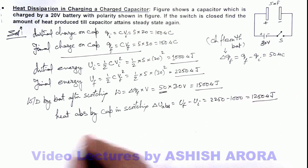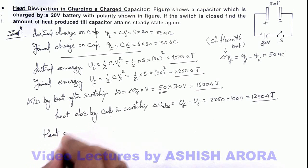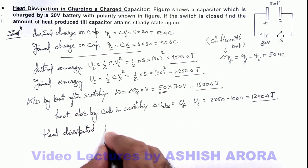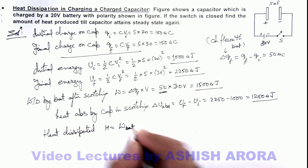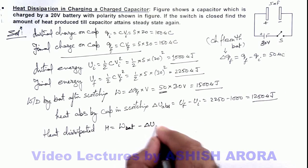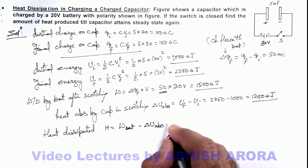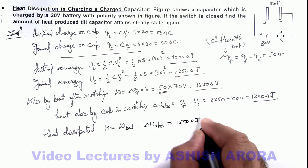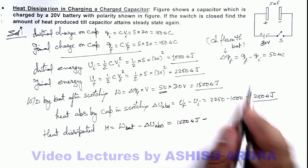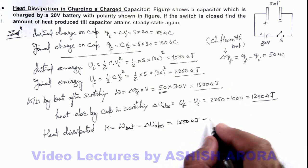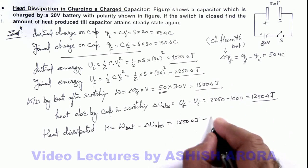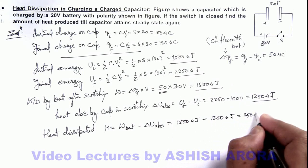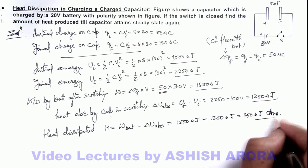So in this situation we can directly calculate the heat dissipated. In this process it can be given as work done by battery, which is supplied by the battery, minus ΔU absorbed by capacitor. So this can be given as work done by battery is 1500 microjoule minus the amount of energy absorbed by capacitor is 1250 microjoule. So the final result we are getting is 250 microjoule. That is the result of this problem.